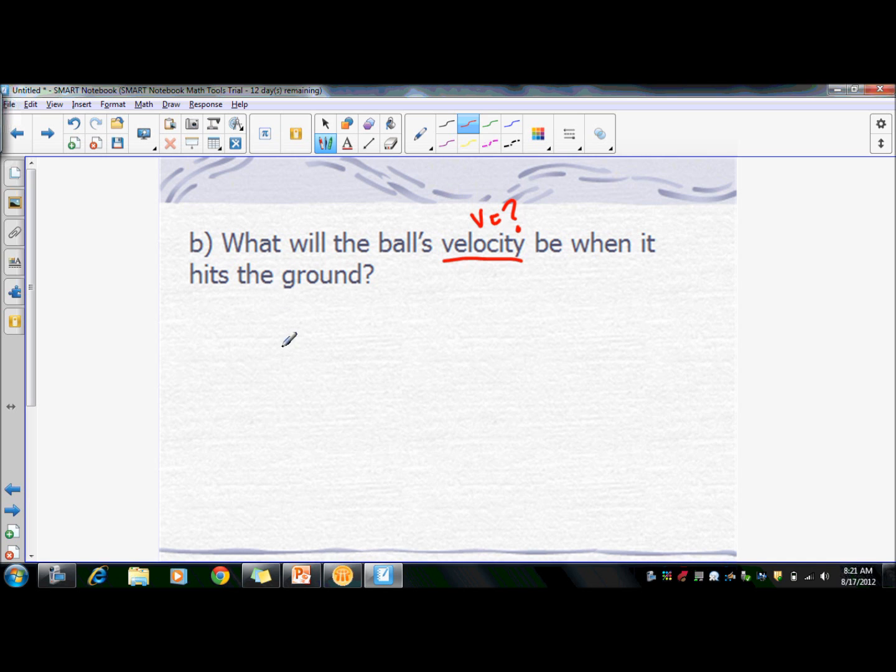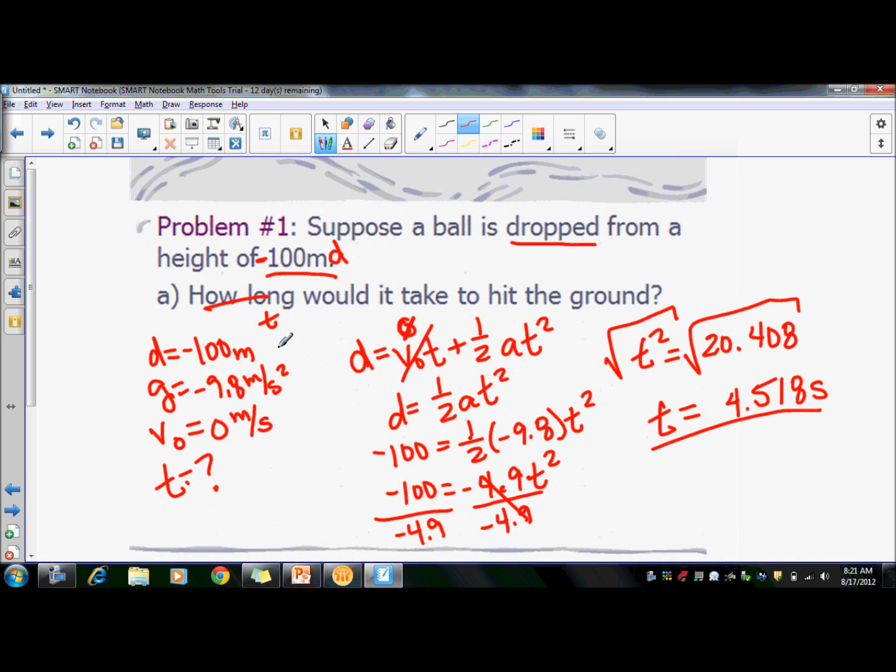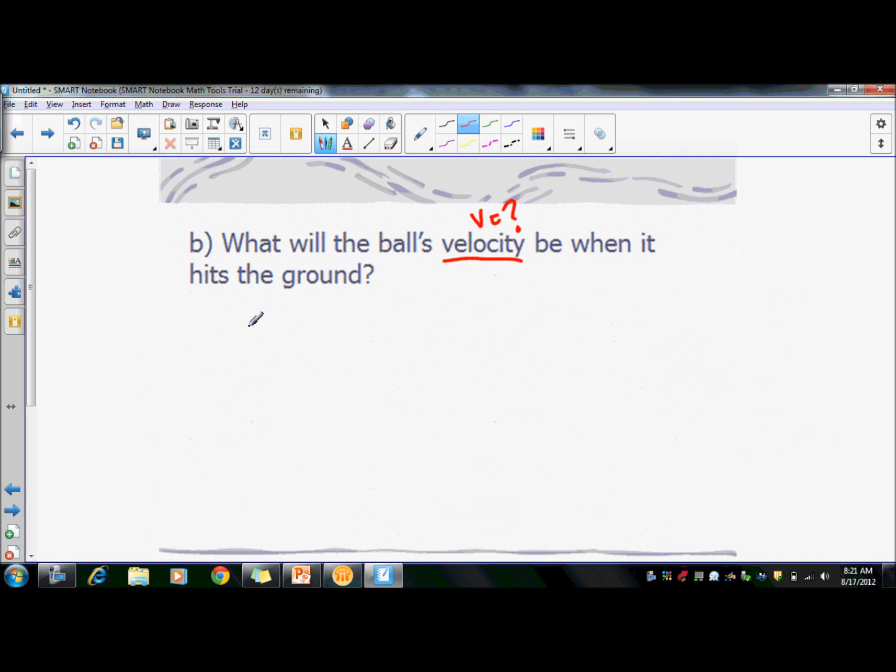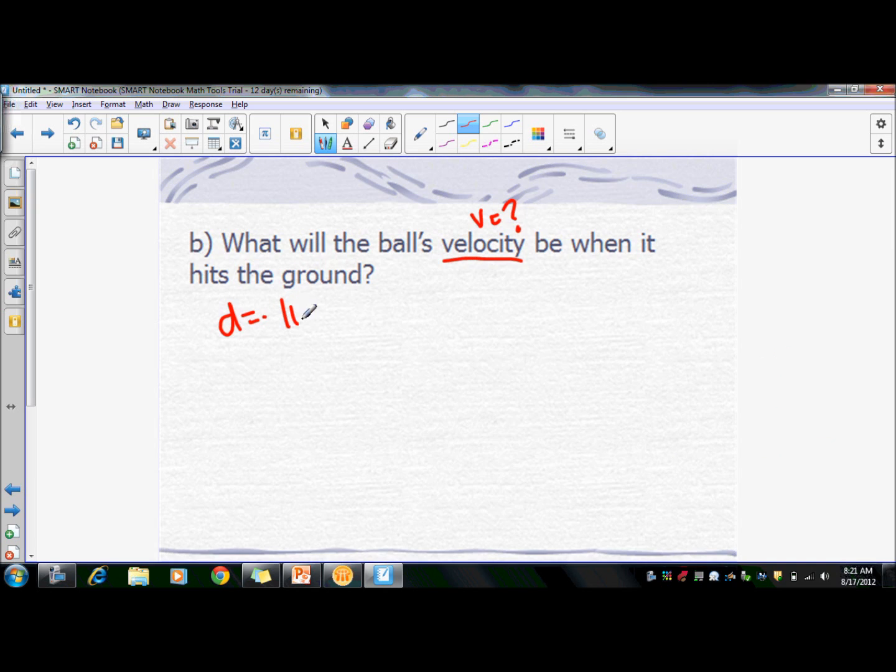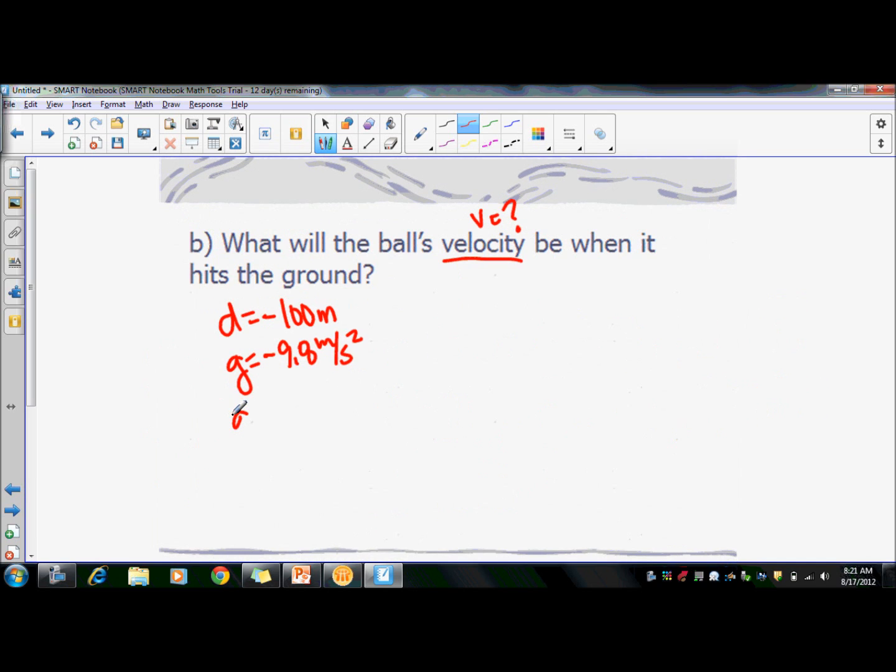So the givens are going to be the same because it's an extension of this problem. So we have D equals negative 100 meters. We have G, which is negative 9.8 meters per second squared. We have V naught equals zero meters per second.